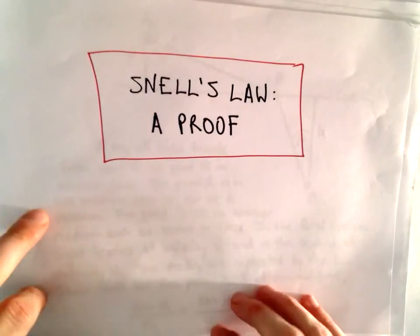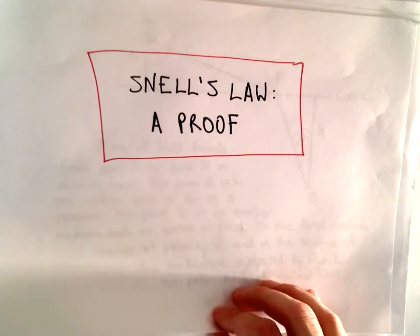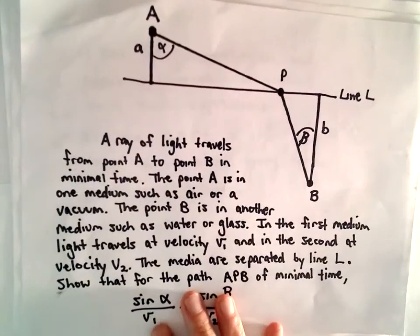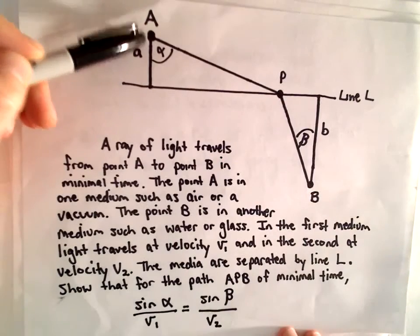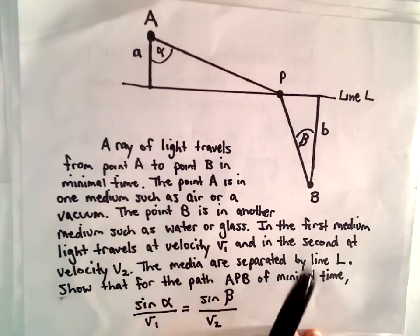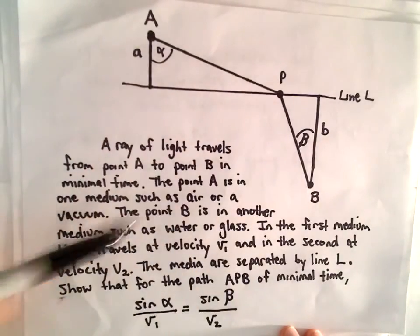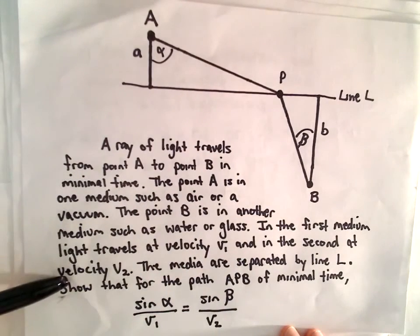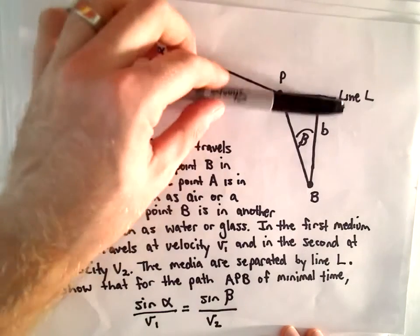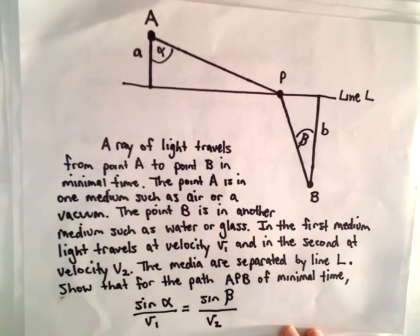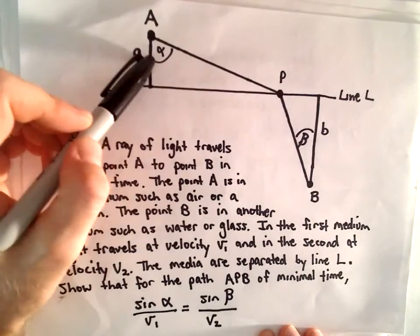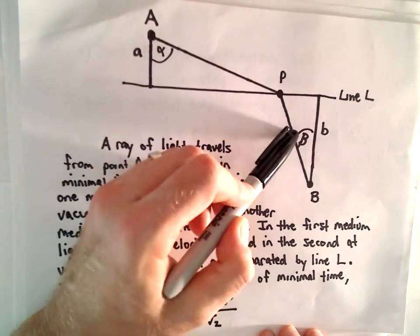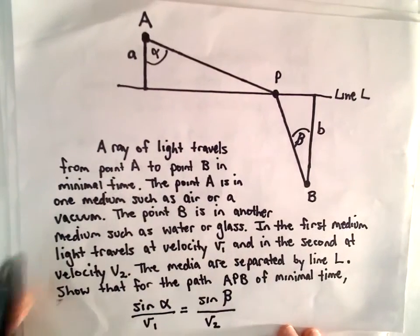Here I'm going to do a quick proof of Snell's Law. All you really need to know to understand this proof is Calculus 1. A ray of light travels from a point A to a point B in minimal time. Point A is in one medium, such as air or a vacuum, and point B is in another medium, such as water or glass. In the first medium, the light travels at a velocity of V₁, and in the second medium at a velocity V₂, and the media are separated by some line L. We're going to show that for the path APB of minimal time, sine of alpha over V₁ equals sine of beta over V₂. This is known as Snell's Law.